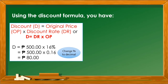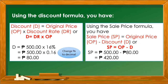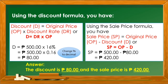The discount is 80 pesos. Let's find the sale price using the formula: Sale Price equals Original Price minus Discount, or SP = OP − D. The original price is 500 minus the discount of 80 pesos. So the answer is 420 pesos. Therefore, the discount is 80 pesos and the sale price is 420 pesos.